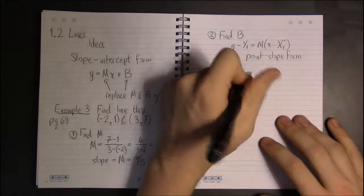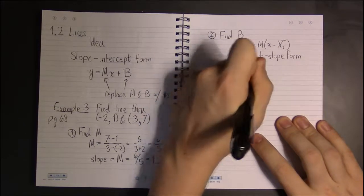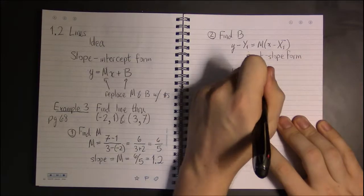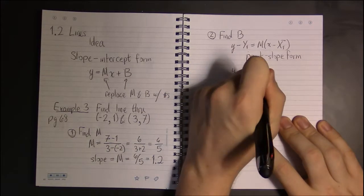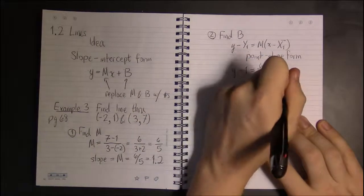So, let's just go ahead and pick the first point. So, y1 is 1, m we just found to be 6/5, and x1 is -2.